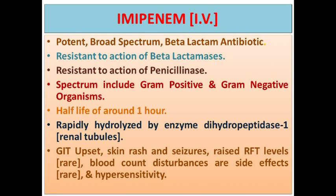Being a broad-spectrum antibiotic, imipenem can give rise to GIT upset, diarrhea, skin rash. People who are prone to seizures might get seizures if you start this antibiotic. Raised renal function tests require dose adjustment if clearance is not adequate. Blood count disturbances can occur but are very rare. Regarding hypersensitivity, you want to ask patients whether there were any earlier hypersensitivity episodes when given penicillin, cephalosporin, or any other antibiotic.